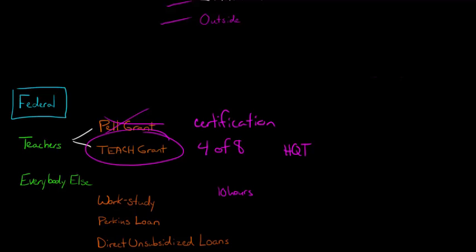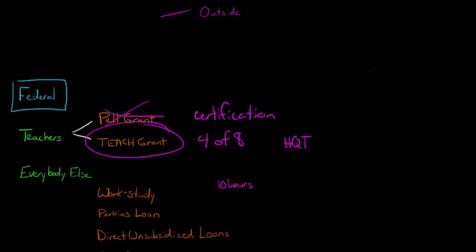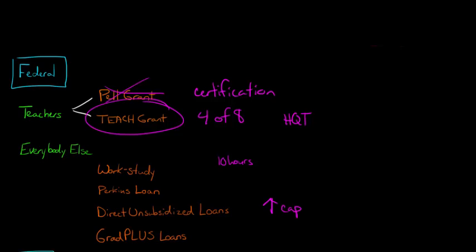You can still get a Perkins loan as a graduate student, although a very small percentage of graduate students obtain Perkins loans. You can get a lot of direct unsubsidized loans. With unsubsidized loans, you are responsible for the interest from day one. It's not government subsidized. However, the loan cap is much higher for grad students than it is for undergraduate, so you can get a lot more in terms of loans to help you finance your education.